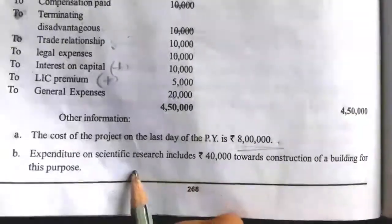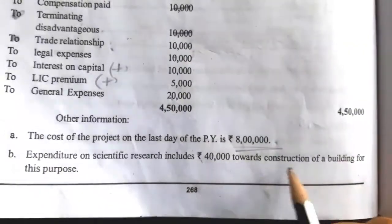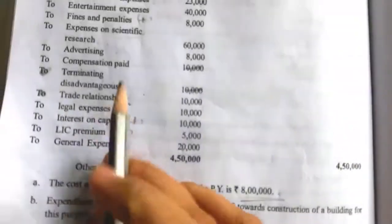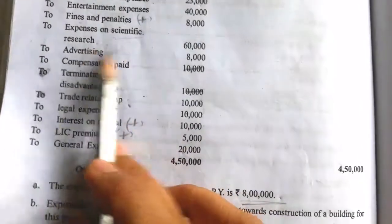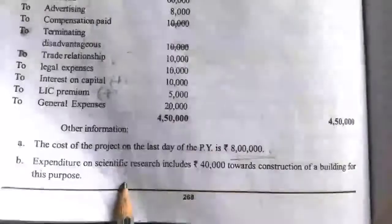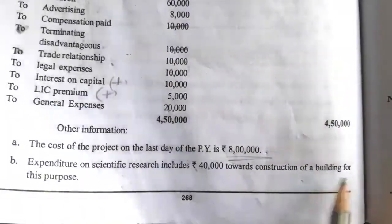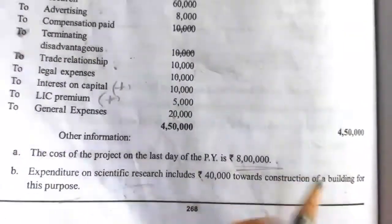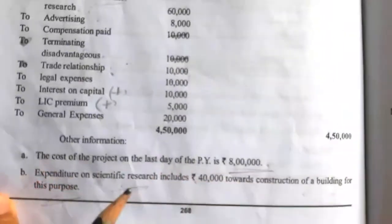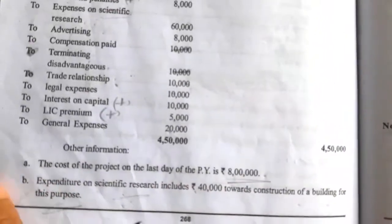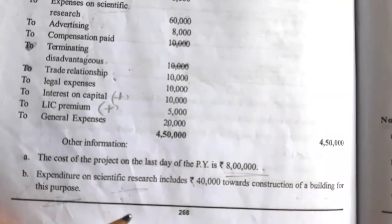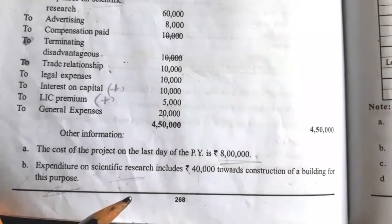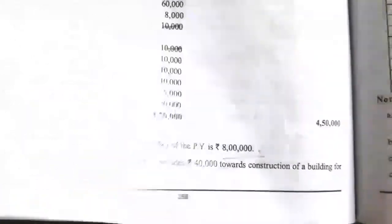Expenditure on scientific research includes 40,000 towards construction of a building for this purpose. When expenses are related to scientific research, any expenditure incurred on scientific research — including construction of a building for that purpose — is taken as allowed business expenses.